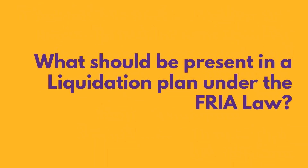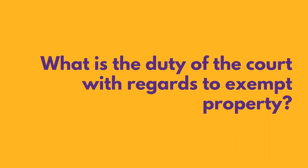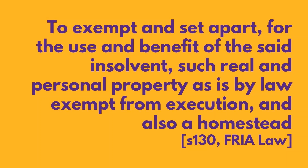What should be present in a liquidation plan under the FRIA Law? The liquidation plan shall as a minimum enumerate: first, all the assets of the debtor; second, all the claims against the debtor; and third, a schedule of liquidation of the assets and payments of the claims. What is the duty of the court with regards to exempt property? To exempt and set apart, for the use and the benefit of the said insolvent, such real and personal property as is by law exempt from execution, and also a homestead.